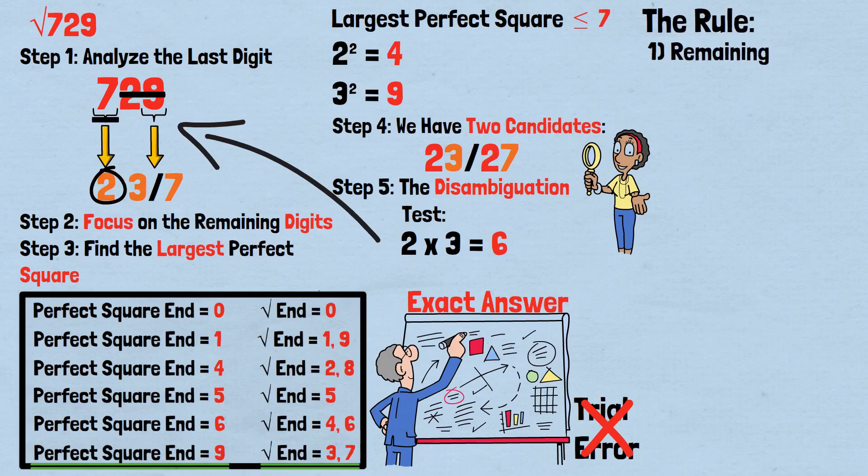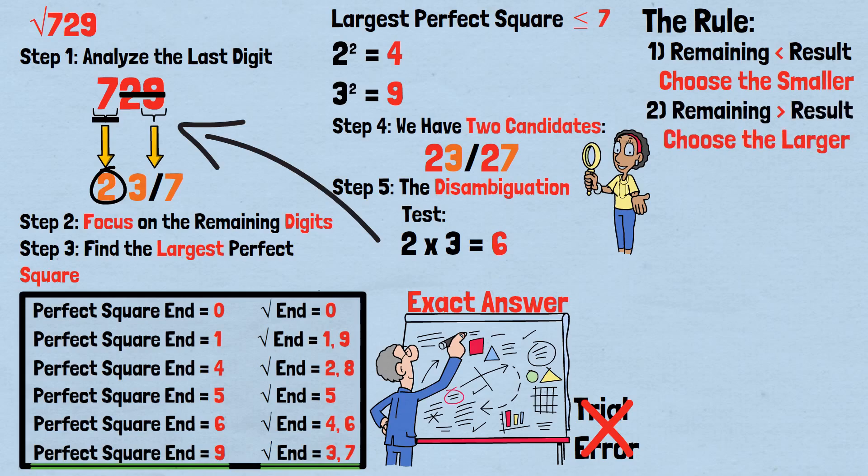The rule: If the remaining digits are less than our multiplication result, choose the smaller ending digit, 3. If the remaining digits are greater than our multiplication result, choose the larger ending digit, 7. Since 7 is greater than 6, we choose the larger ending digit, 7.